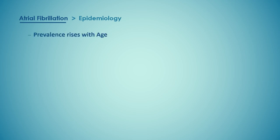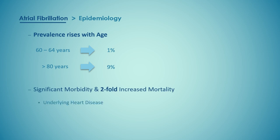The prevalence of AF rises with age, affecting 1% of those aged between 60 and 64 years and increasing to 9% of those aged over 80 years. AF is important because it is associated with significant morbidity and a twofold increase in mortality, mainly due to its association with underlying heart disease. The main risk is embolic stroke. If the duration of atrial fibrillation is more than 48 hours, clots may form in the left atrial appendage due to stagnation of blood. These clots have the propensity to detach and embolize spontaneously or when cardioversion is done, therefore it is necessary to anticoagulate patients with prolonged AF and prior to cardioversion.